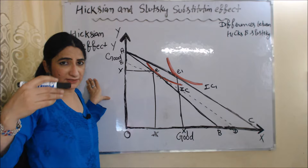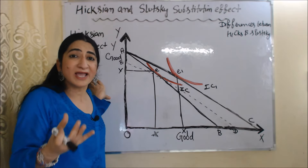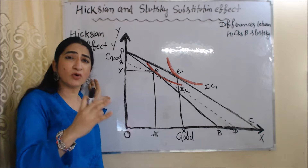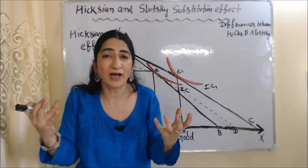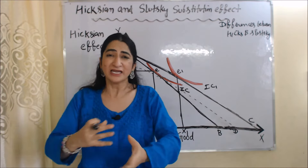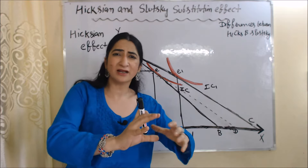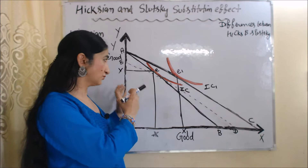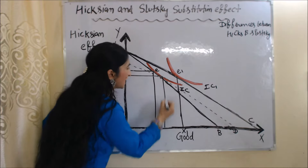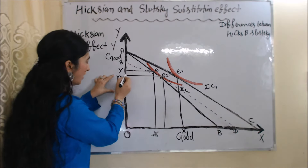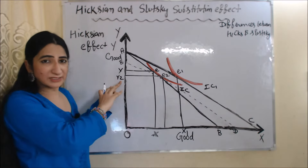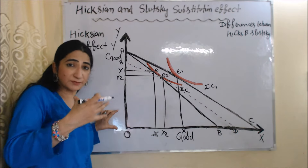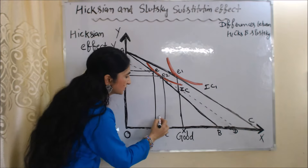Now, even though the money income of the consumer has reduced, he will still increase quantities of X good. Why? Because the price of X has reduced, and our consumer is rational — he knows it would be more profitable to buy more quantities of the good whose price has reduced. In real life, we also do the same: whenever we go to a sale or hear about a price reduction, we start buying more of that good. So our new equilibrium point is E2. At this equilibrium point, the consumer reduces quantities of Y good from OY to OY2, but increases the quantity of X good from OX to OX2, meaning he substitutes X good for Y good. That's why this X to X2 is called the substitution effect — this is the Hicksian substitution effect.